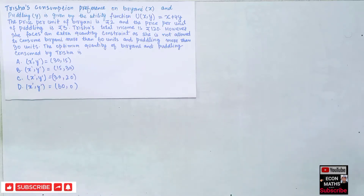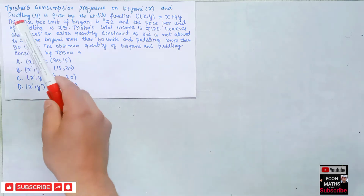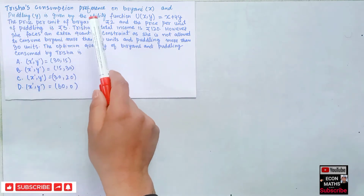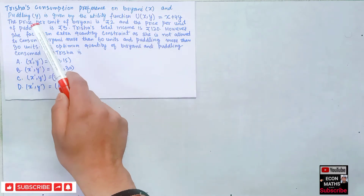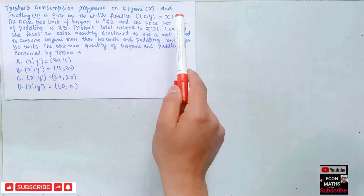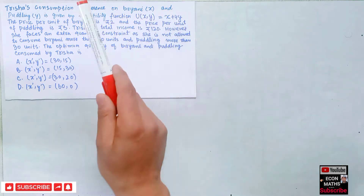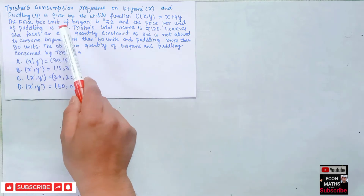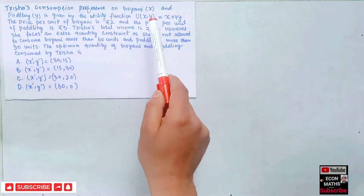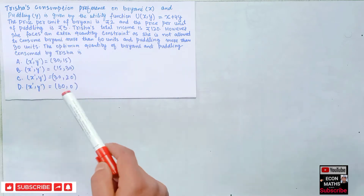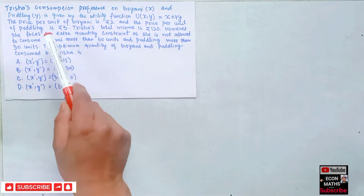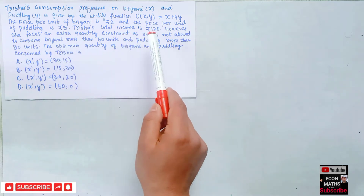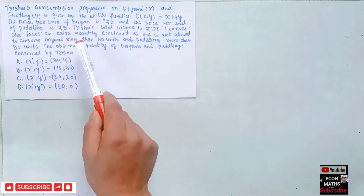Another question from the GATE Economics paper of 2021: Trisha's consumption preference on biryani, denoted by x, and pudding, denoted by y, is given by the utility function U(x,y) = x + 4y. The price per unit of biryani is 2 rupees and the price per unit of pudding is 3 rupees. Trisha's total income is 120. However, she faces an extra quantity constraint — she is not allowed to consume more than 60 units of biryani.